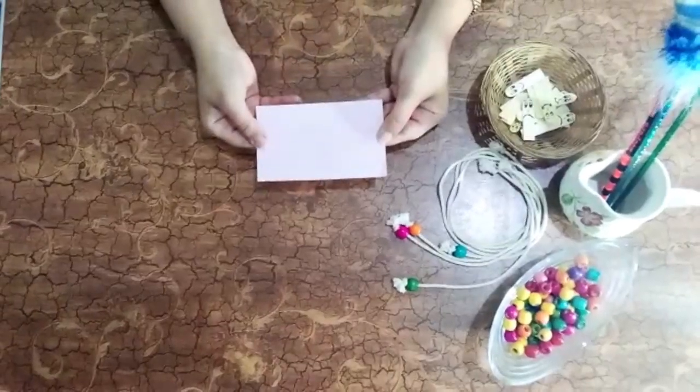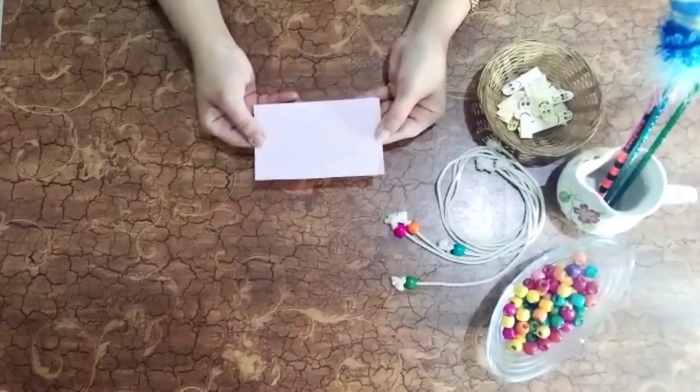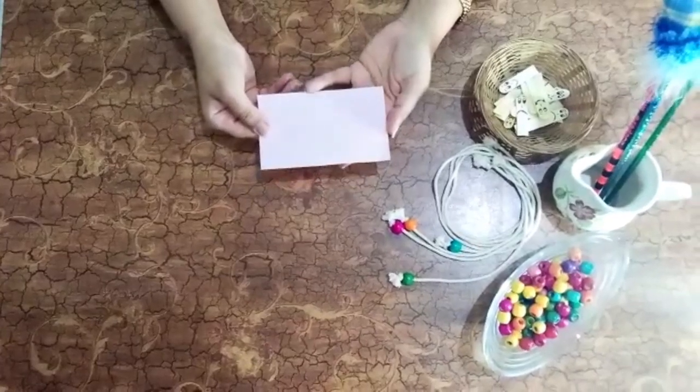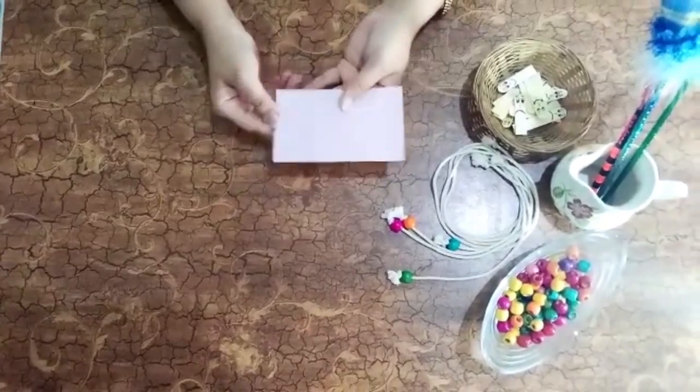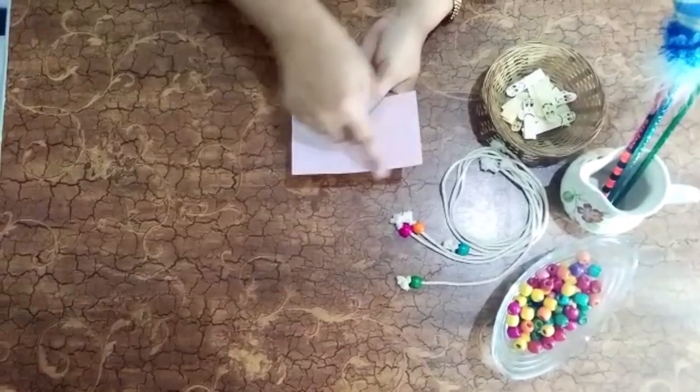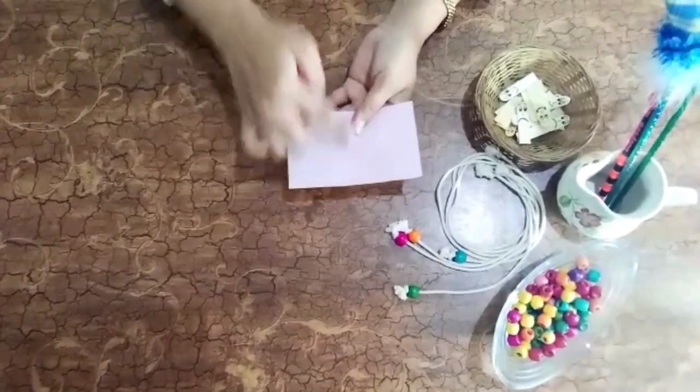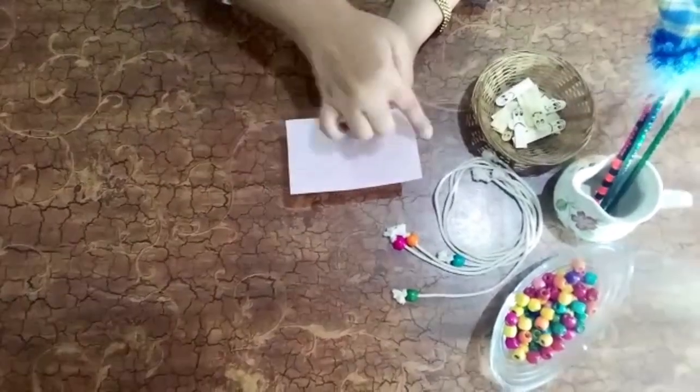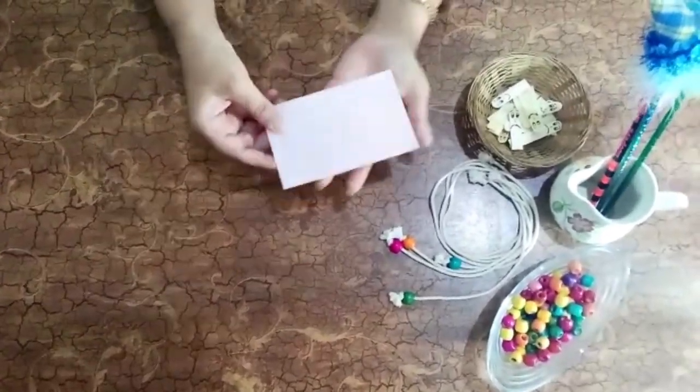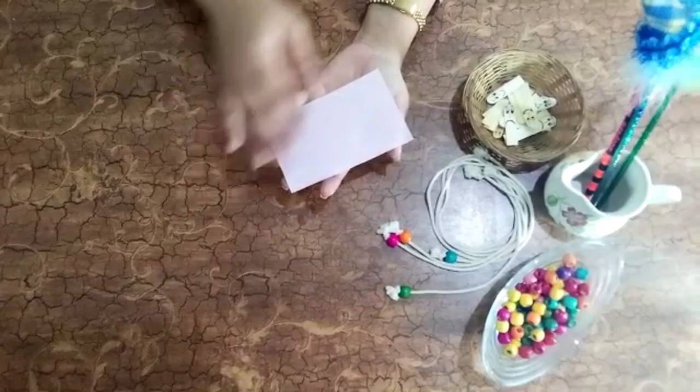This is another 2D shape. It is called a rectangle. One of the properties of a rectangle is it has two small sides and two long sides, and these two parallel sides are of the same length.